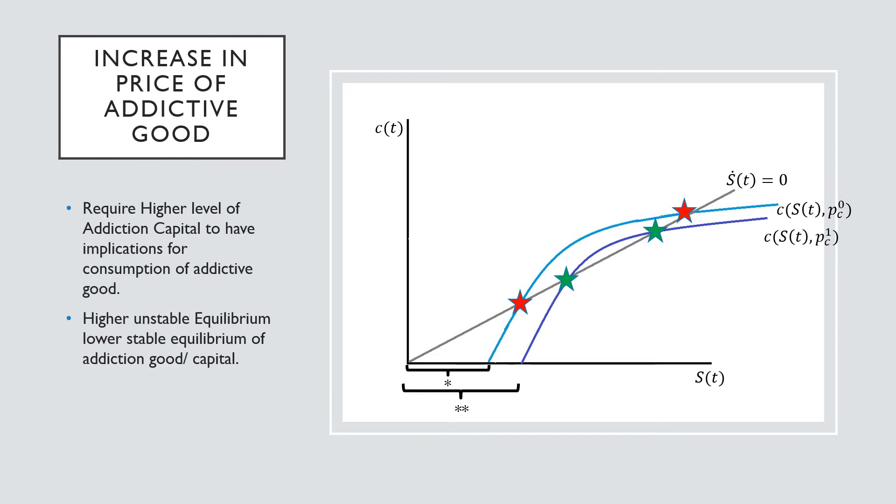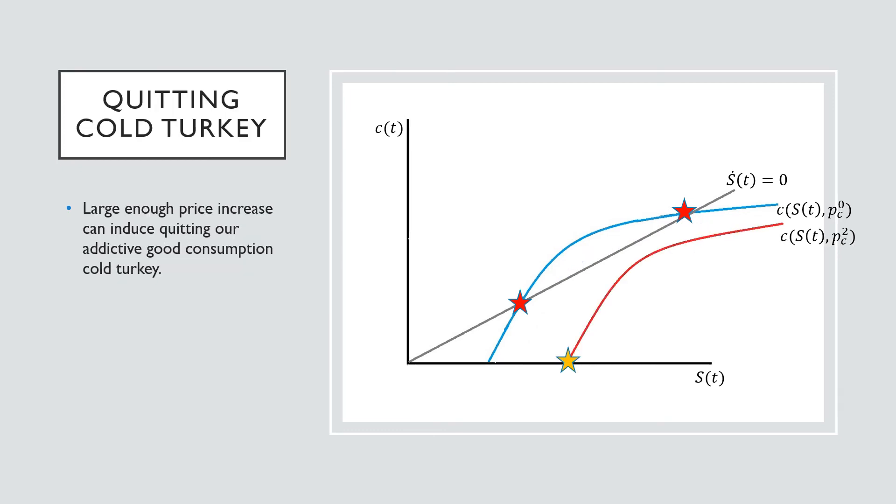If we think about an increase in the price of the addictive good, we're going to see a rightward shift in this curve that relates the impact of our consumption capital on our consumption good. This is also parameterized by our price, as revealed through our steady state equation for capital in our previous video. We'll see a higher unstable equilibrium and lower stable equilibrium, so really the same type of effect.